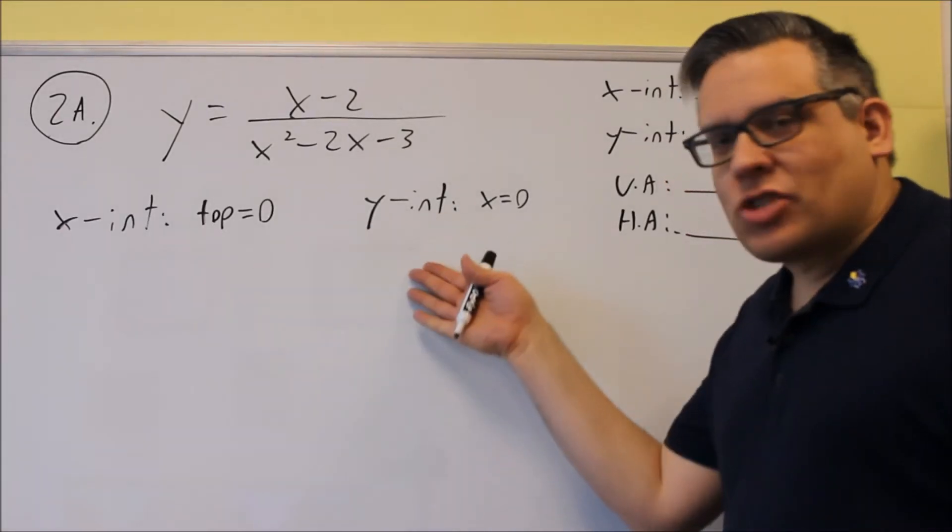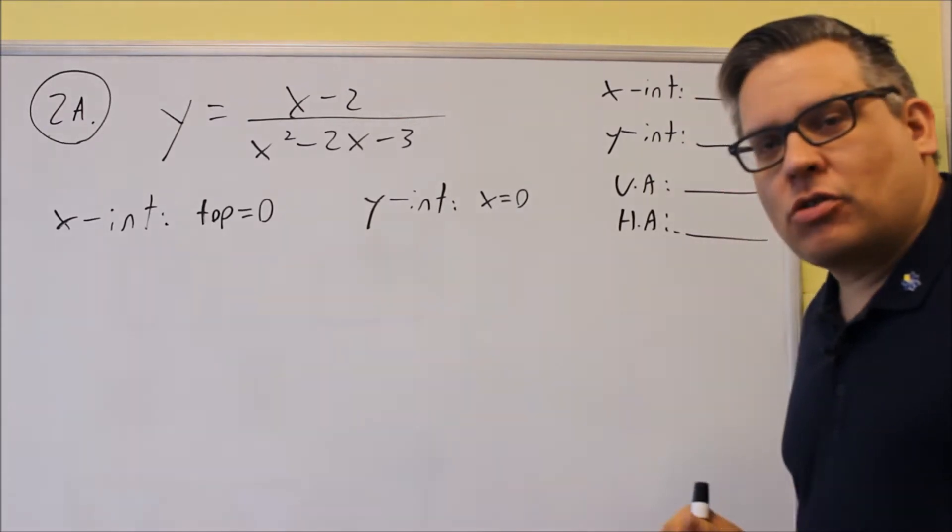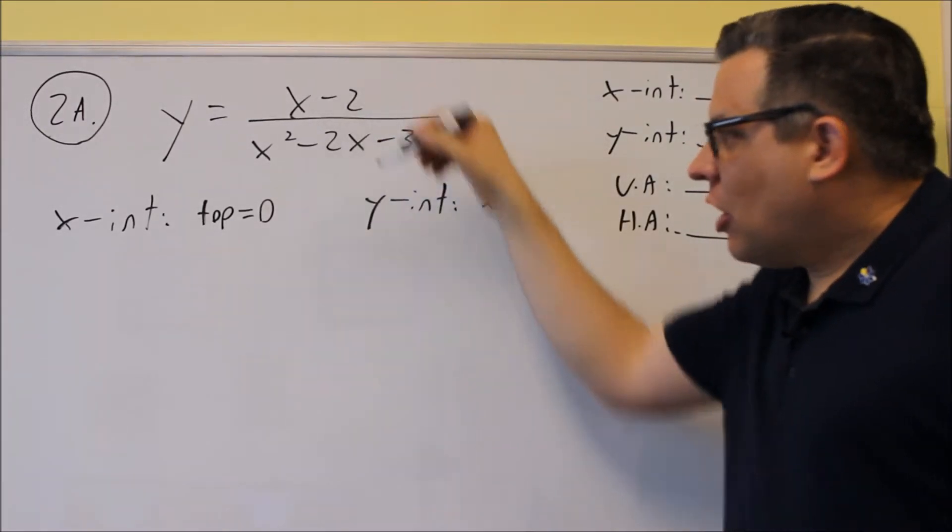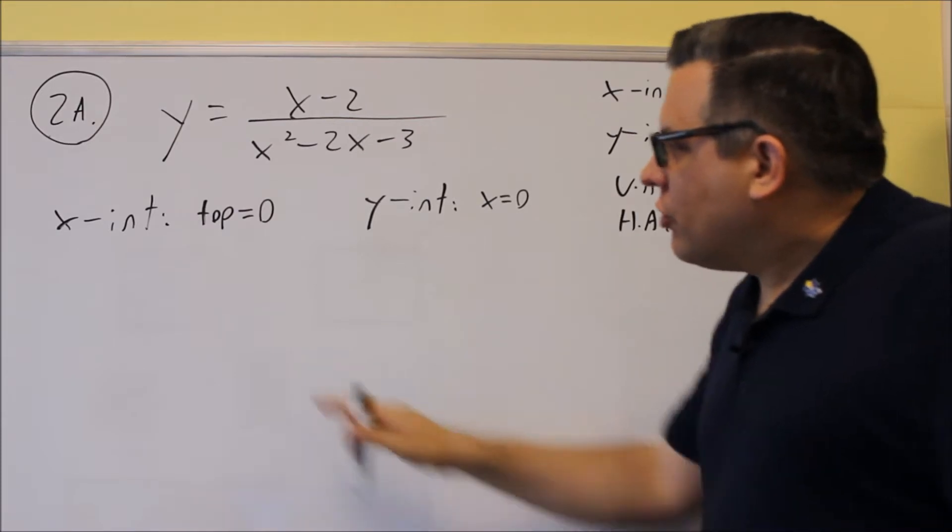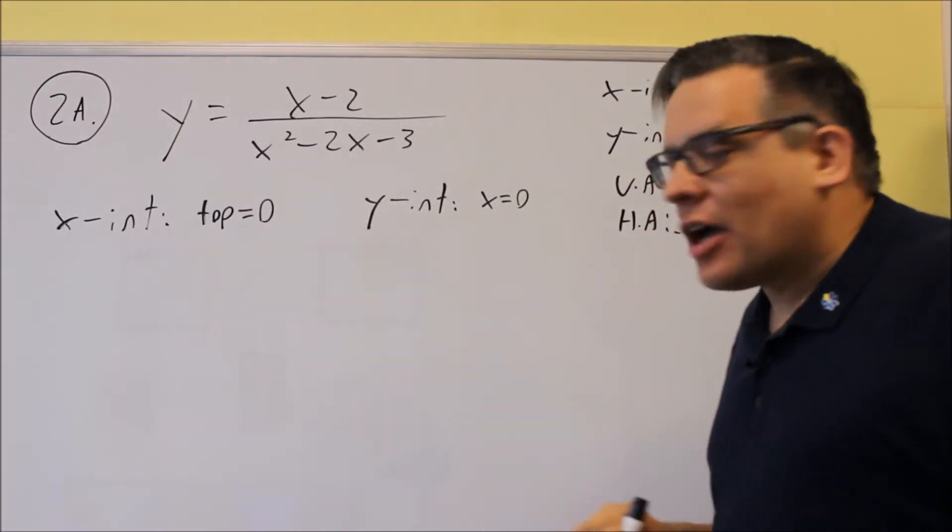Okay, for this problem we want to find the intercepts and asymptotes and graph. When we do x-intercepts with a rational function like we have here, we need to set the top equal to zero whenever you want to find the x-intercept.